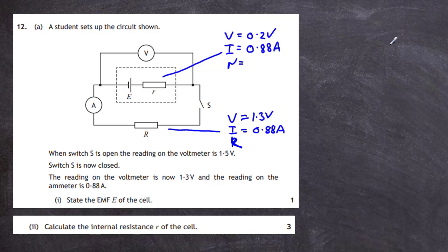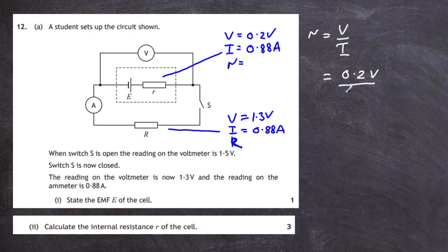We can now calculate the internal resistance r of the cell. Using r = V/I, the potential difference across the internal resistance (the lost volts) is 0.2 volts, and the current is 0.88 amps. So r = 0.2 / 0.88 = 0.23 ohms. That's three marks for the internal resistance, just by following the labels around the circuit.